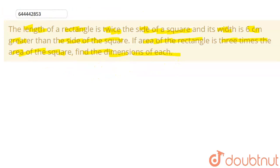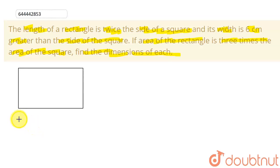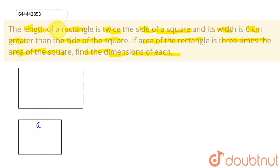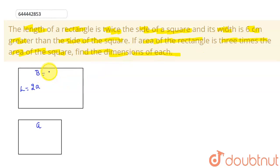So in this question, there is a rectangle and there is a square. Let the side of the square be 'a'. The length of the rectangle is given as twice the side of the square, so it will be 2a. The width is given as six centimeters greater than the side of the square, so width = a + 6.